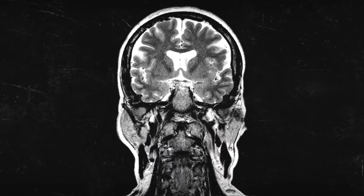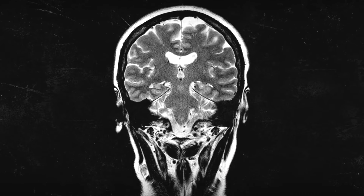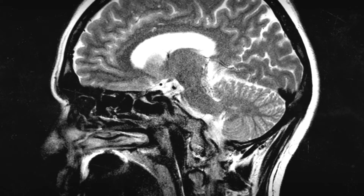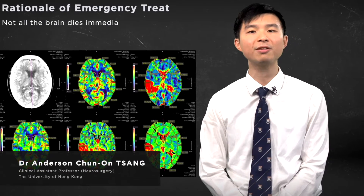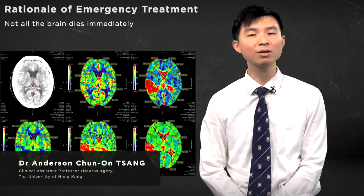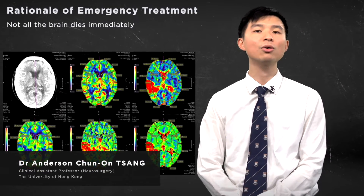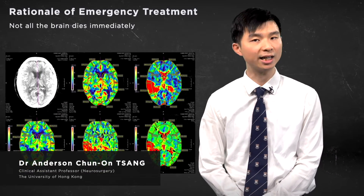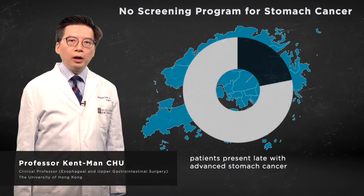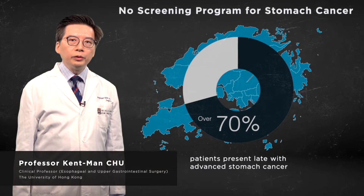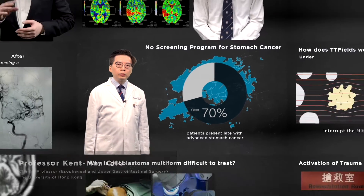The reason why we can offer emergency treatment for stroke patients is because when the blood vessel is blocked, not all the brain dies immediately. In general, for patients who have early disease, the outcome after treatment is actually very good.